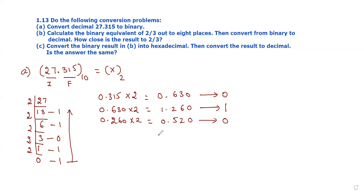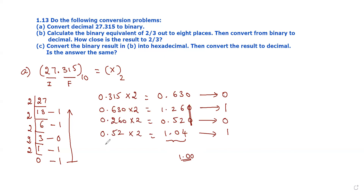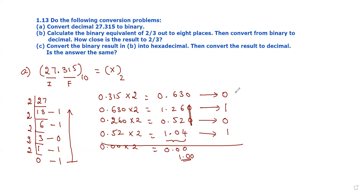Next, 0.52 multiplied by 2 gives the next product. We continue this multiplication process for the fractional part. The binary digit at each step is the integer part of the product. We will continue this process step by step.